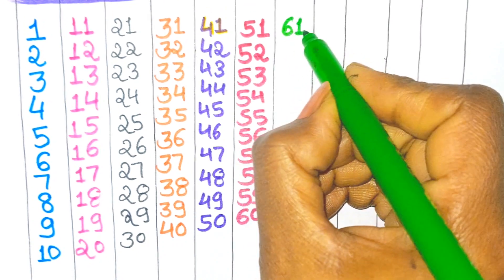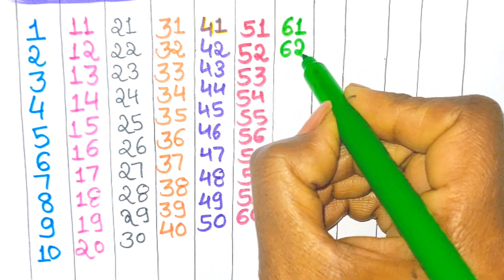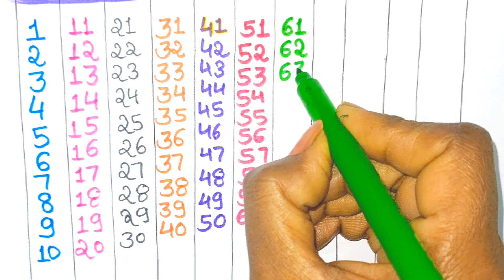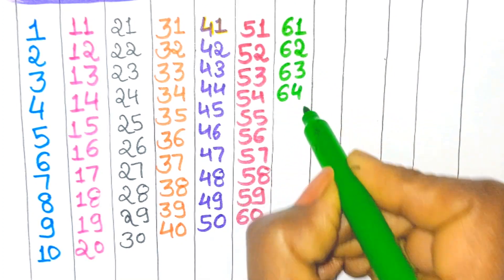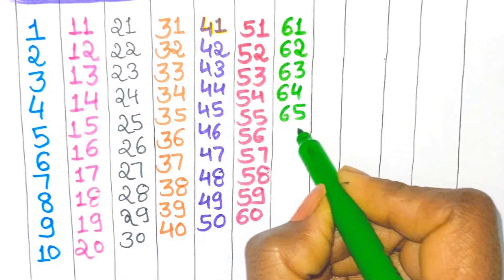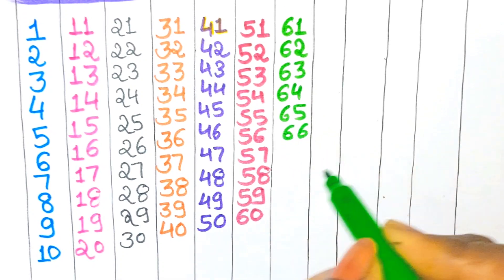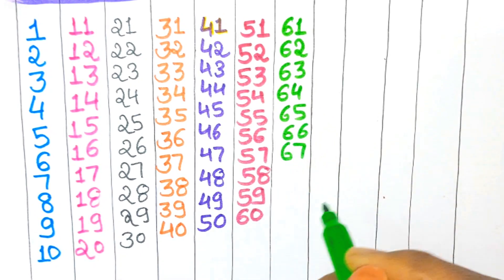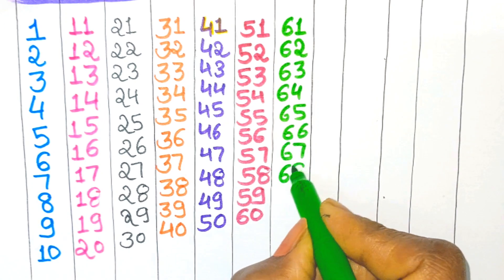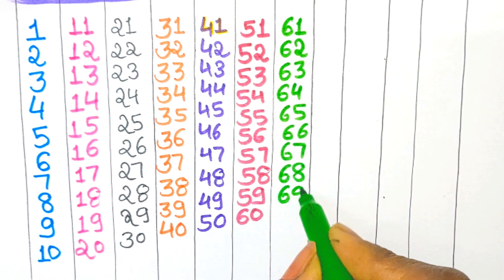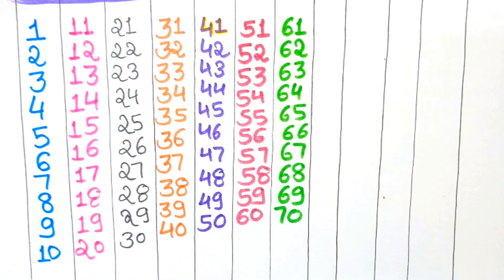Sixty one, sixty two, sixty three, sixty four, sixty five, sixty six, sixty seven, sixty eight, sixty nine, seventy.